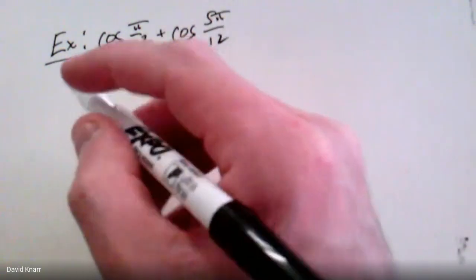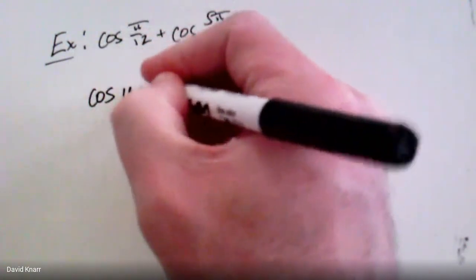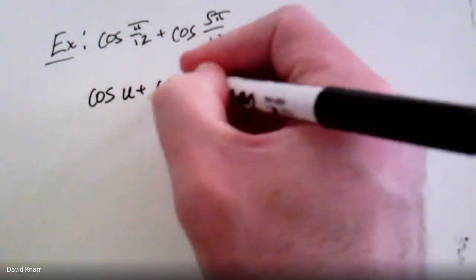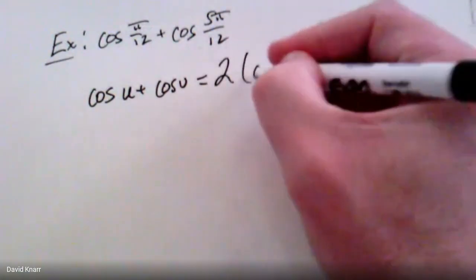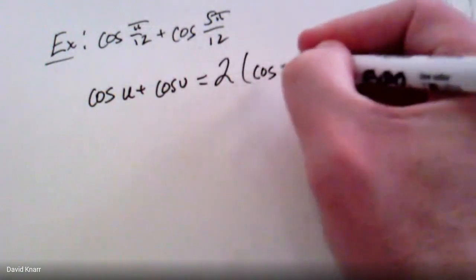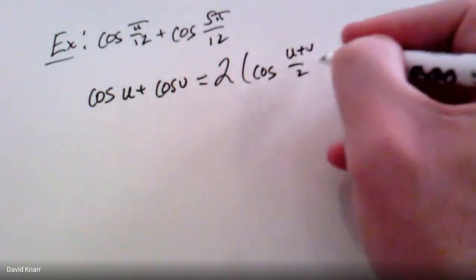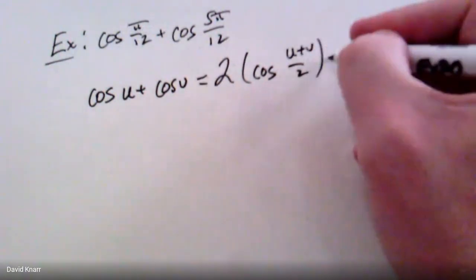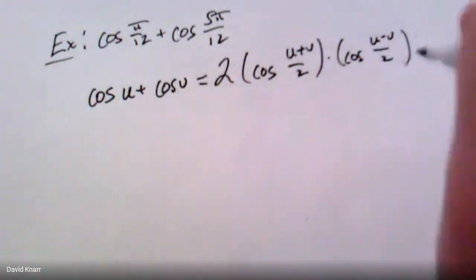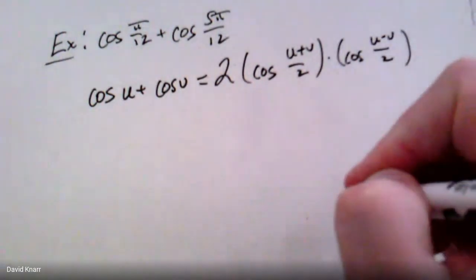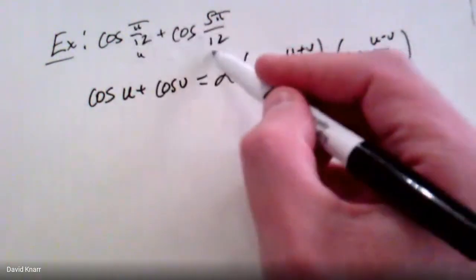The formula we're going to use is: cosine u + cosine v = 2·cos((u + v)/2)·cos((u − v)/2). Here u = π/12 and v = 5π/12, and we're simply going to apply this formula.